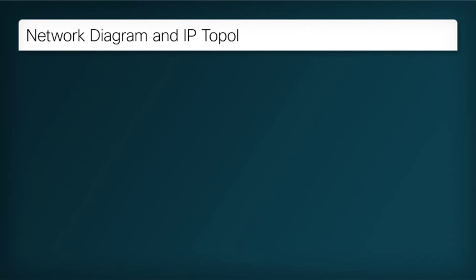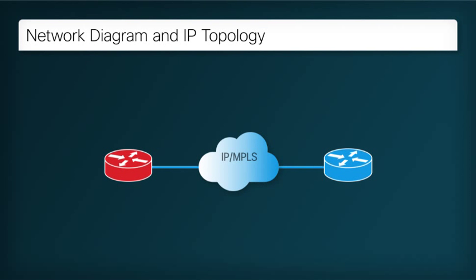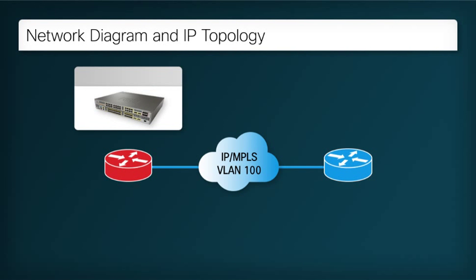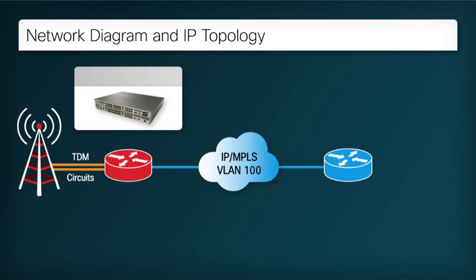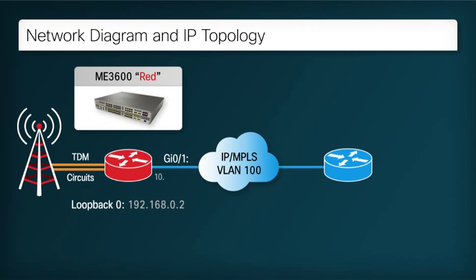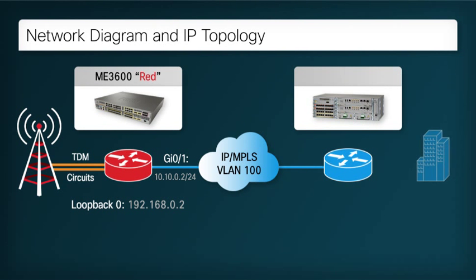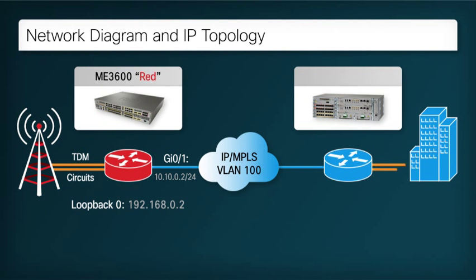The high-level design we will implement consists of two locations interconnected with an IP MPLS-enabled Ethernet network with a VLAN tag of 100. On the left side, the ME3600 has been deployed at the remote location, as indicated by the cell site icon. It is connected to the equipment in that site using two separate TDM circuits. This node will be known by the hostname RED and have a loopback address of 192.168.0.2.